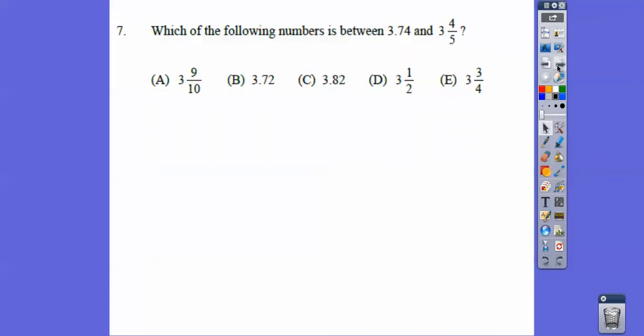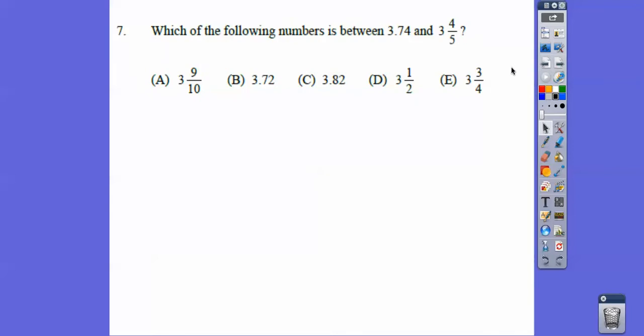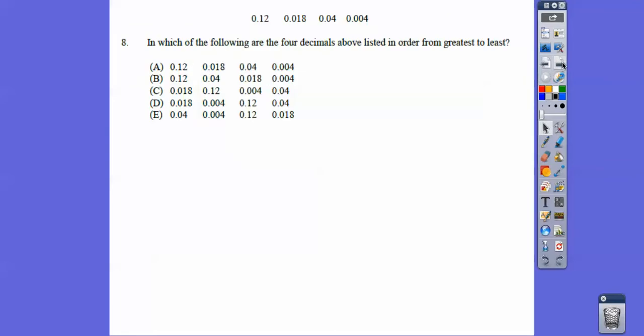Which of the following numbers is between 3.74 and 3 and 4 fifths? 4 fifths is the same as 0.8 right there. So 3.74 and 0.8. Which one's that going to get us? That's 3.5, there's 3.75, so it's going to be choice E right there. This is 3.9, 3.72, 3.82, that's over. This is 3.5, 3.75, so it's going to be choice E.